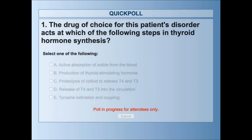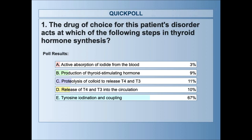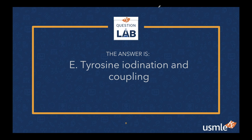Remember, on your test it's helpful to cover up those answer choices so you aren't focusing solely on them and you're picking up on all the clues. We'll give you a few more seconds. Our current record is 63% correct. It looks like 67% of you picked E — tyrosine iodination and coupling — and that is the correct answer. We're off to a great start, and that's a new record for our Question Lab.